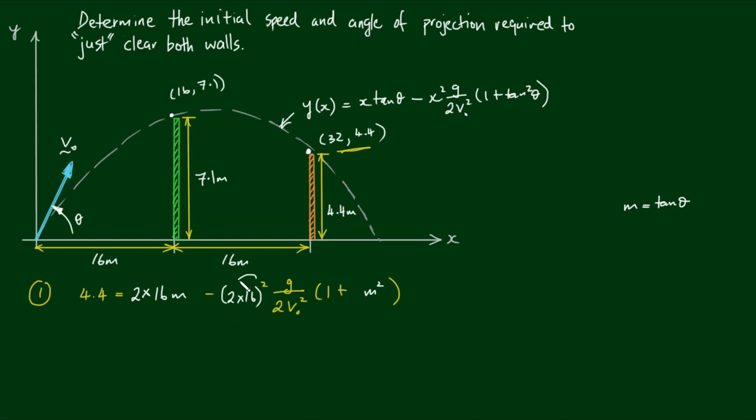For now, let's take this power into the parentheses. So we have 4.4 equals 2 by 16m minus 4 times 16 squared g over 2v0 squared times 1 plus m squared. The 4 and 2 reduces to 2 at the top. Let's label this as equation 1.